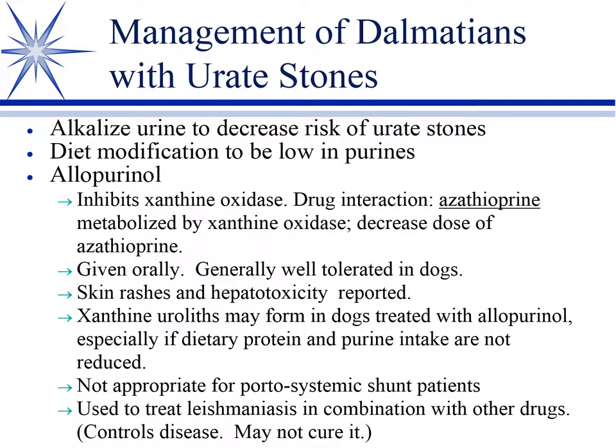That's not the only thing you want to do. You want to alkalize the urine — this tends to decrease the solubility of the uric acid. Diet modification, lower in purines, is also proposed. But allopurinol is our mainstay.